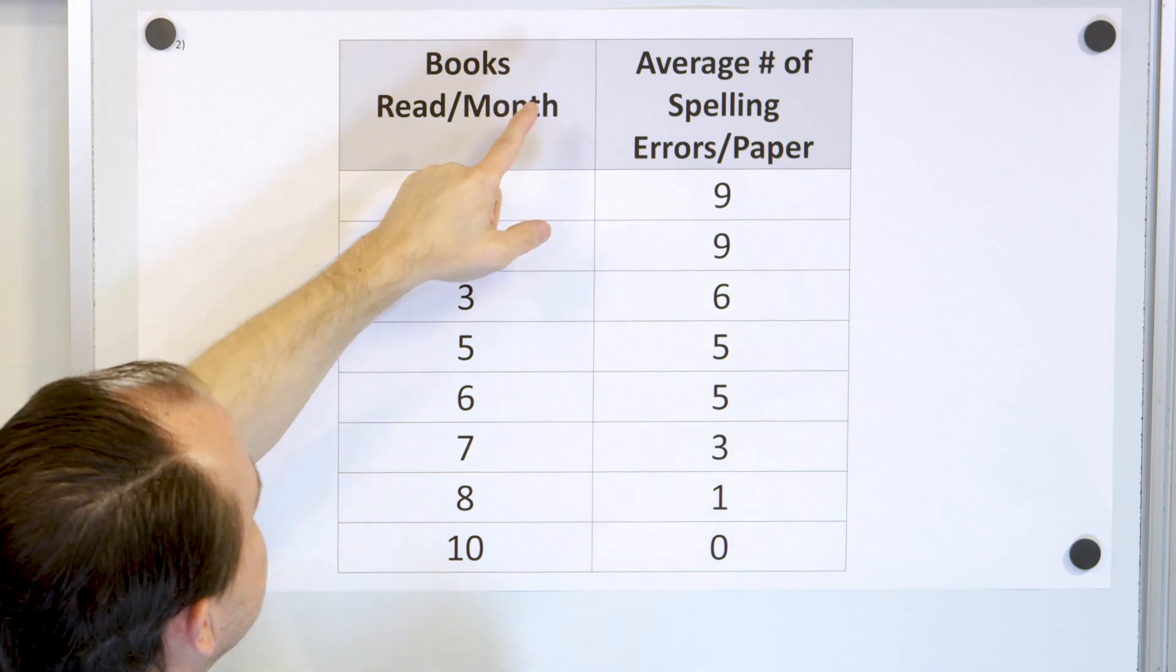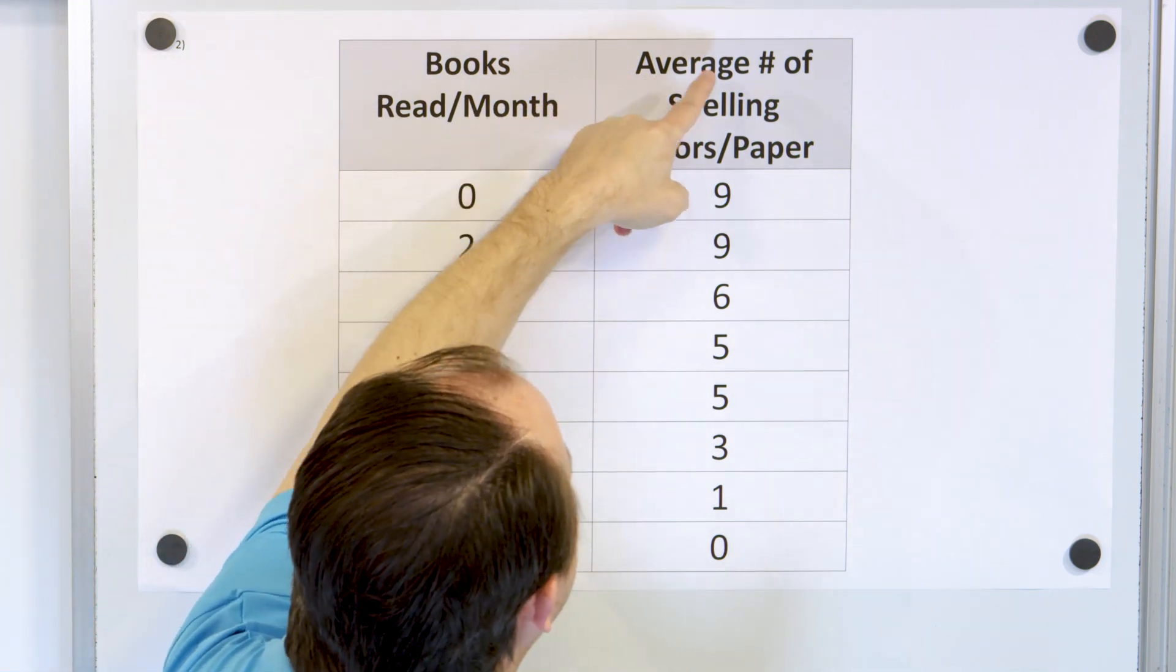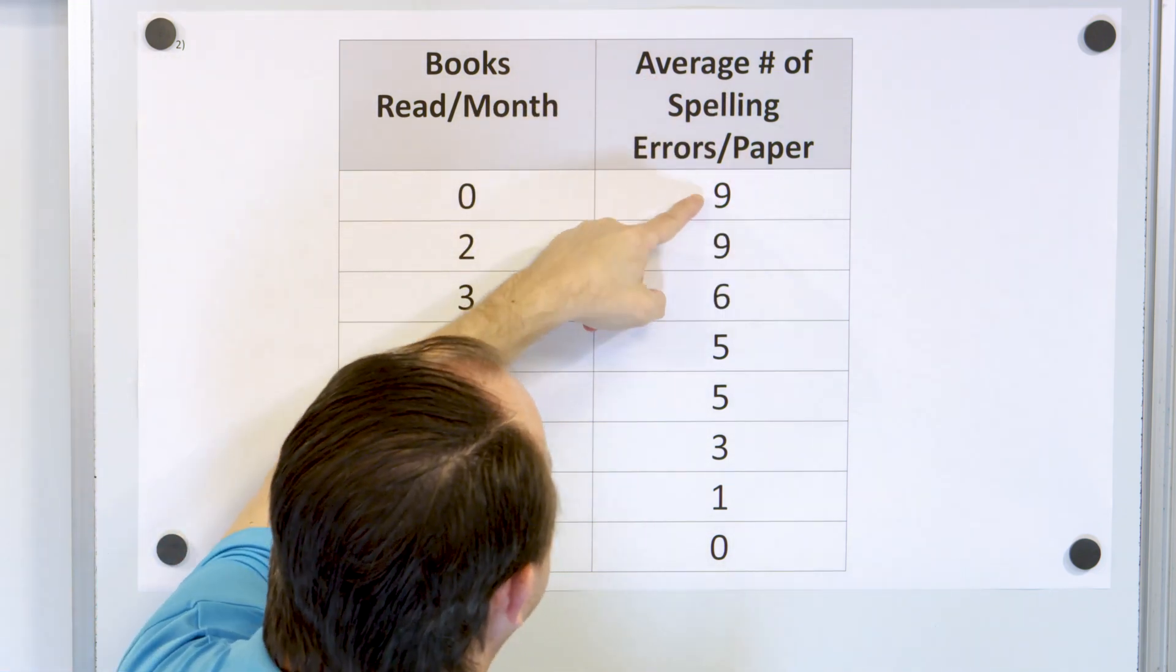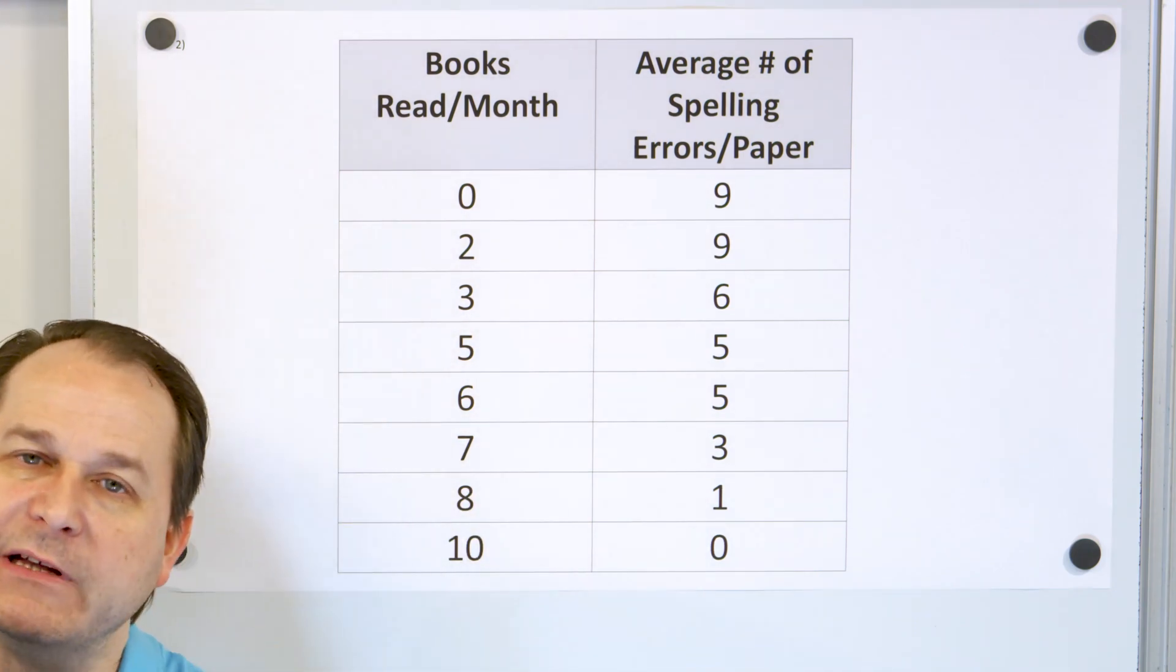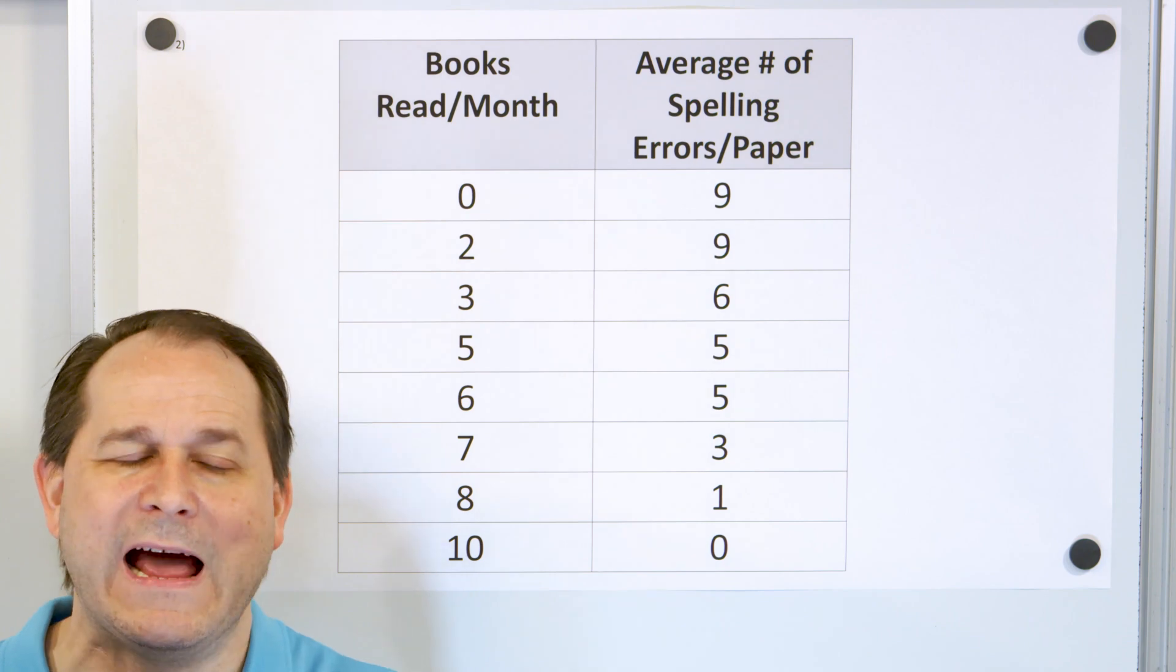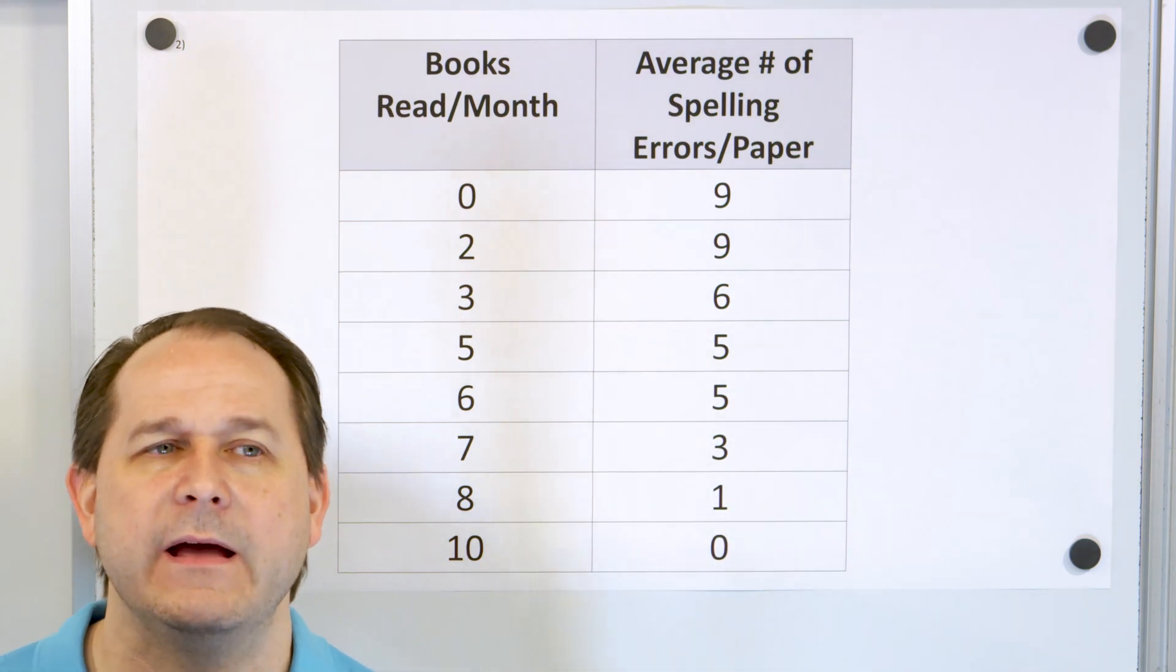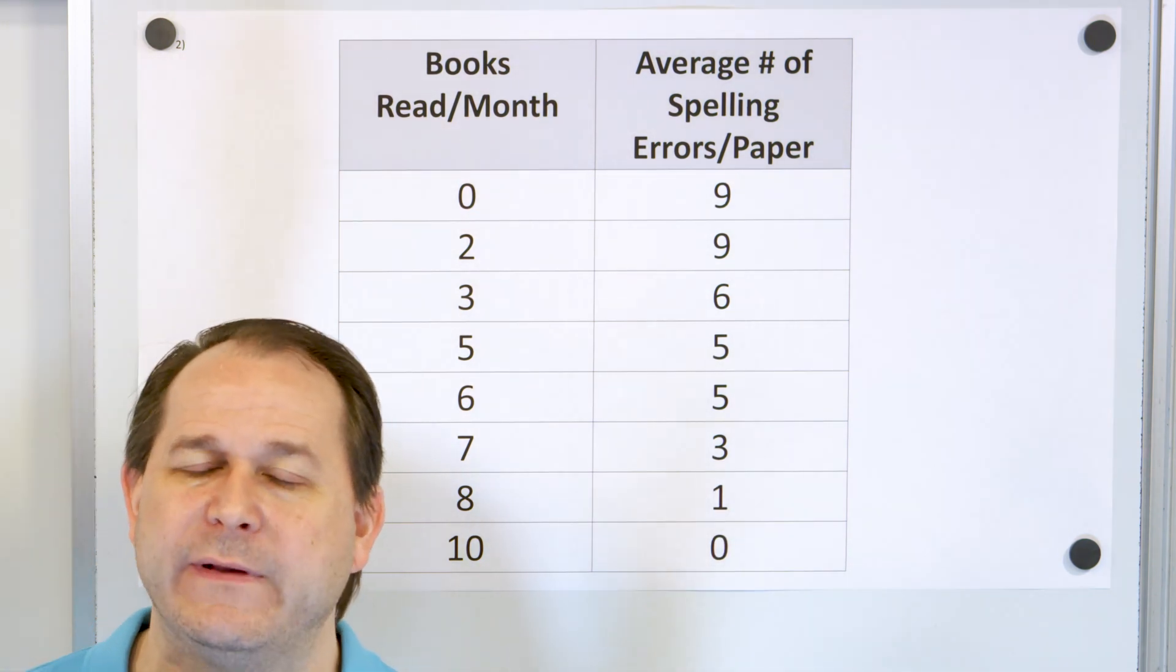Here's the number of books read per month, and then we actually calculate the average number of spelling errors per paper that someone writes. So we want to basically plot and see if there's a relationship or correlation between how much a person reads and how many spelling errors they have when they write papers.